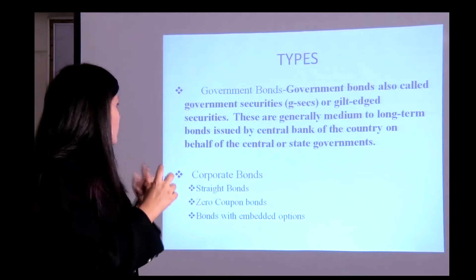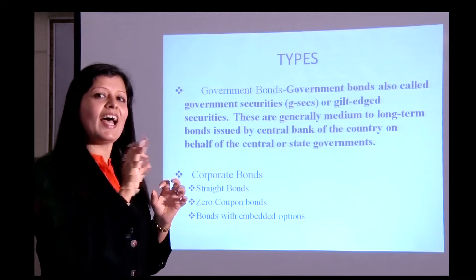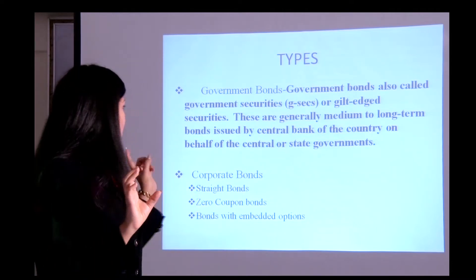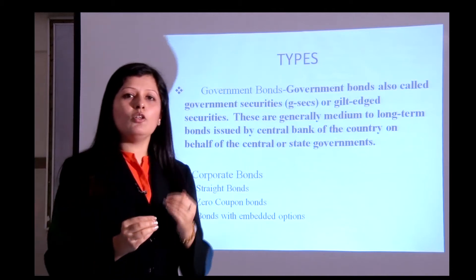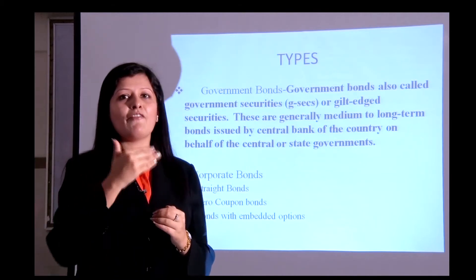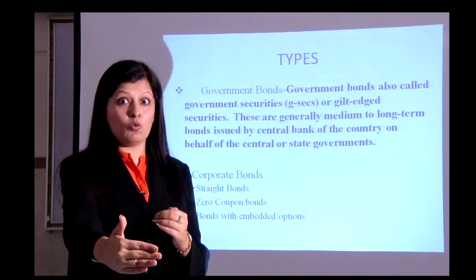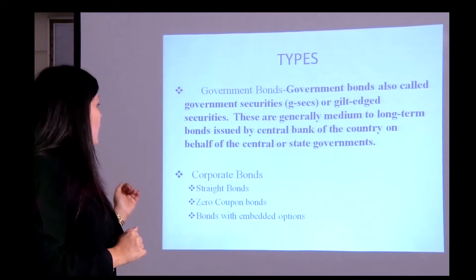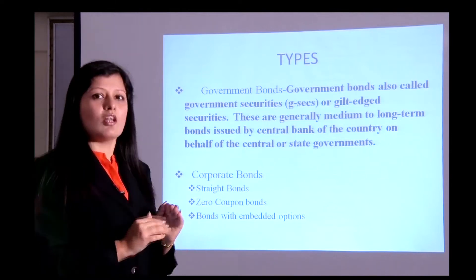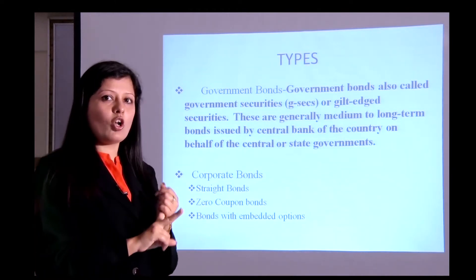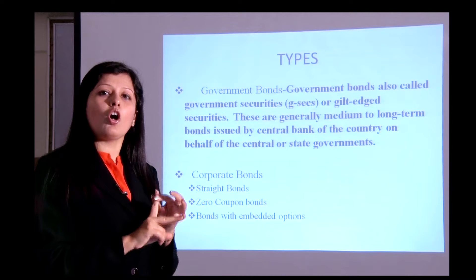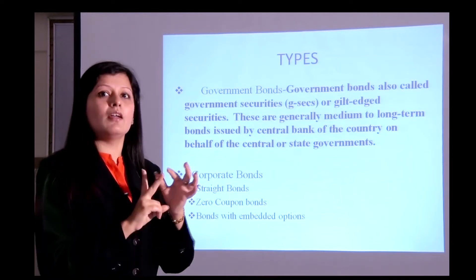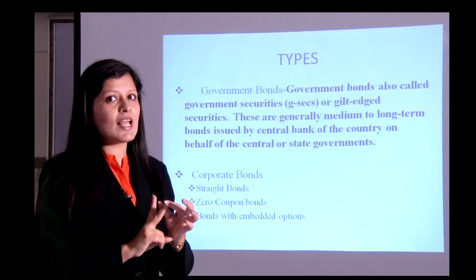A straight bond has a defined interest rate, for example a 10% coupon rate. A zero coupon bond means you pay me 100 today, and after 15 years you take back 10,000 — this is also called a deep discounted bond. Bonds with embedded options come in two types: call option and put option. A call option is the right to buy but not the obligation; a put option is the right to sell but not the obligation.